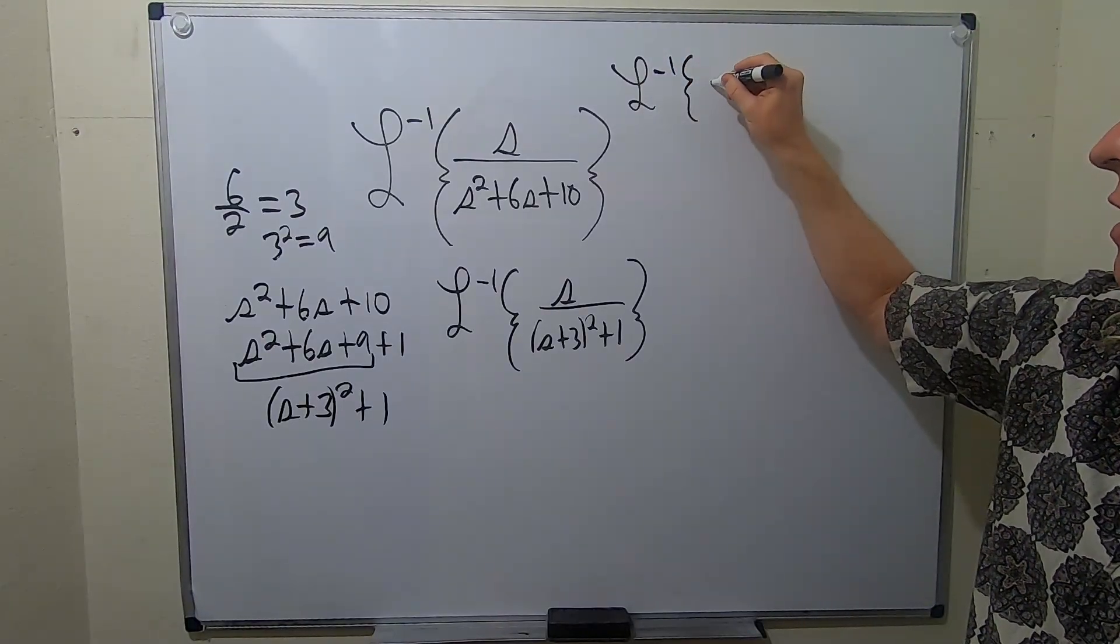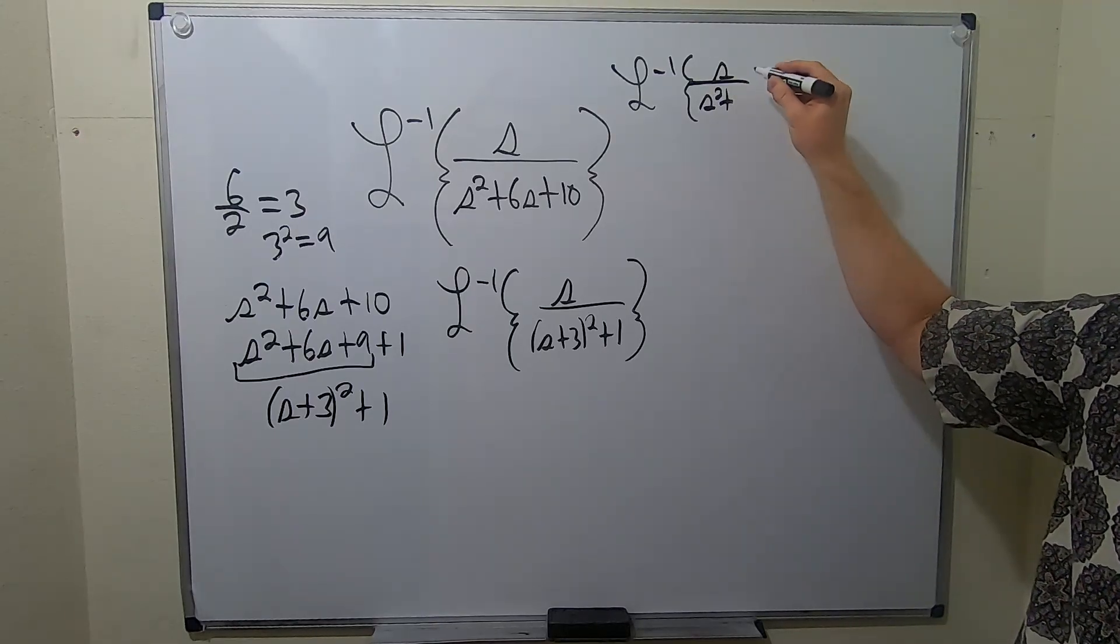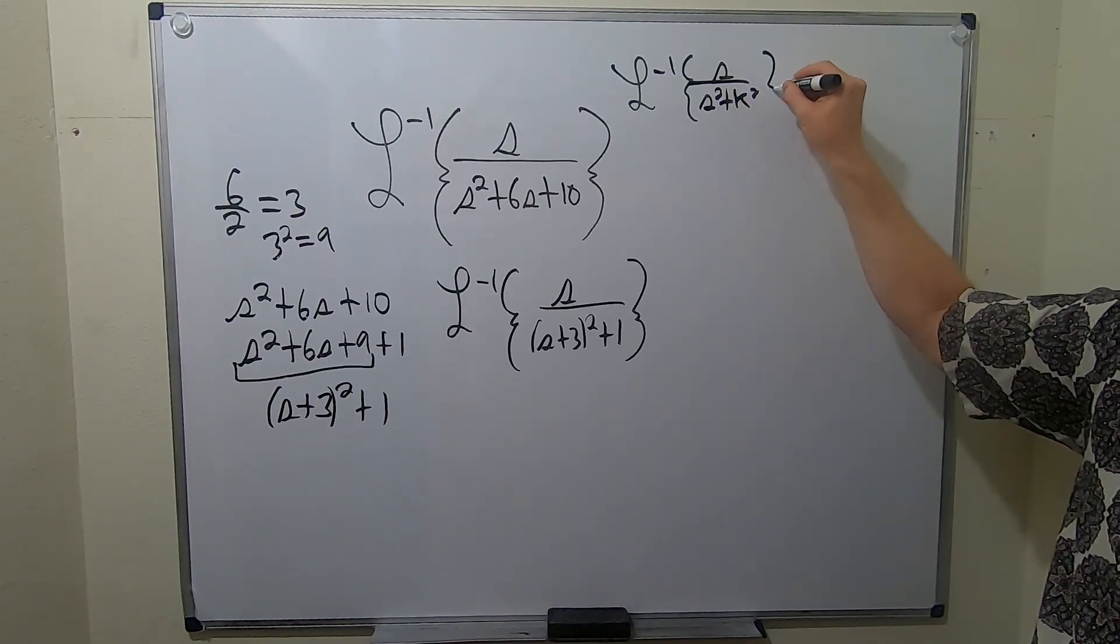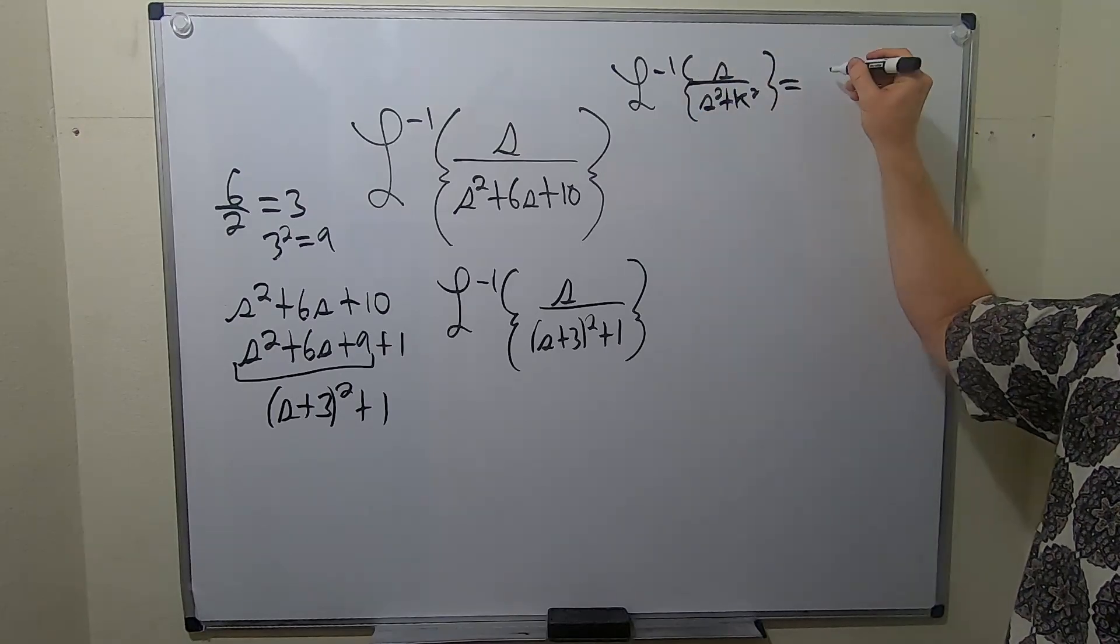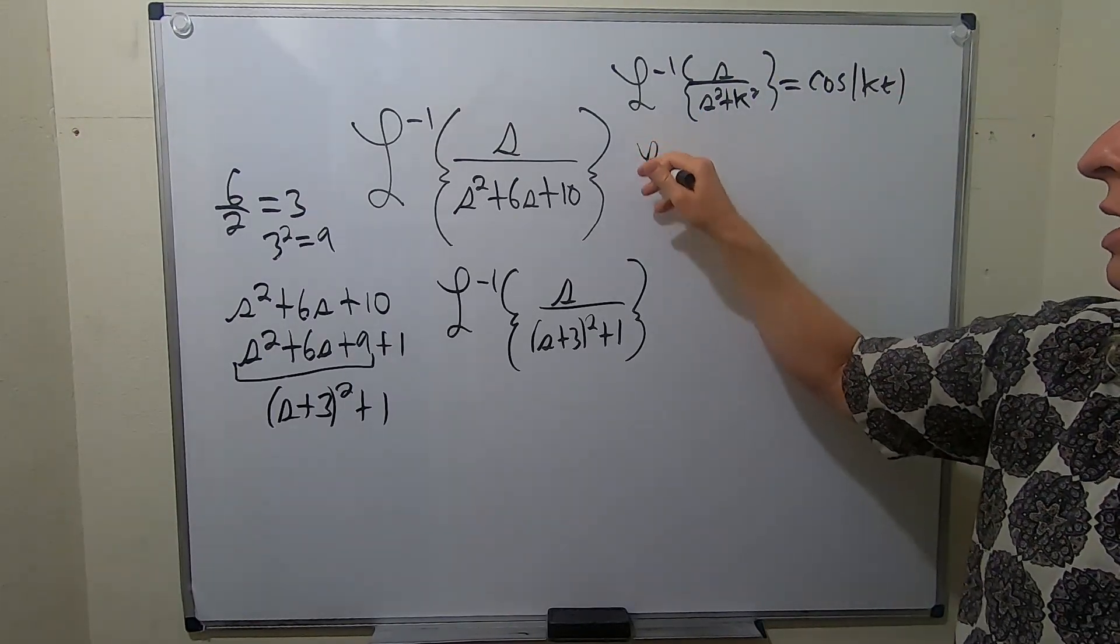Recall if you have the inverse Laplace of s over s squared plus k squared. Remember, cosine has the s. So this is cosine kt.